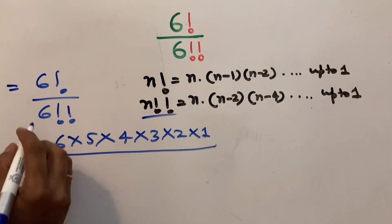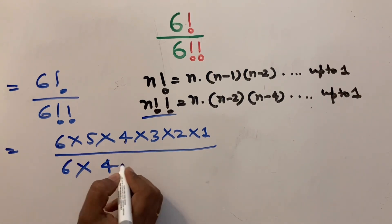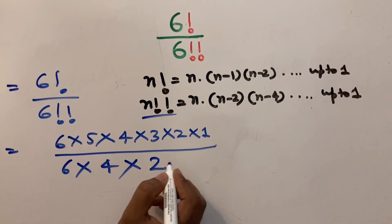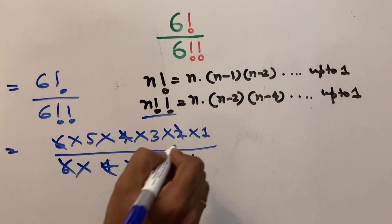From here the 6 double factorial equals 6 multiply 4 multiply 2 multiply 1. From here 6 and 6 cancel, 4 and 4 cancel, 2 and 2 cancel.